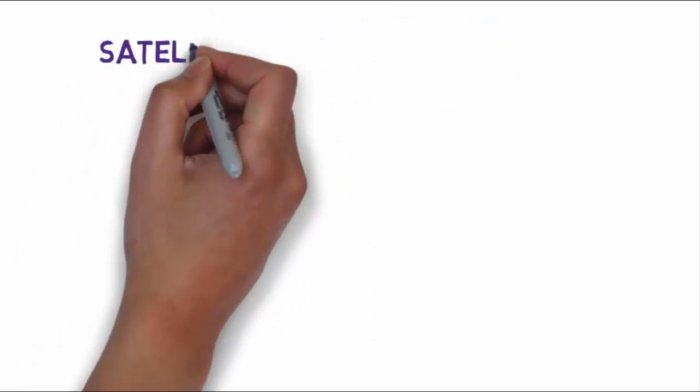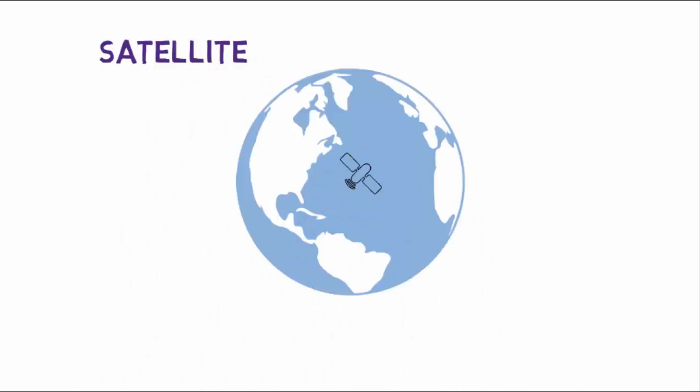At first we will see what is a satellite. A satellite is any physical object which revolves around the earth in a known orbit at a known height. The path followed by this object is called its orbit. And a communication satellite is an orbiting artificial satellite that receives a communication signal from a transmitting ground station.